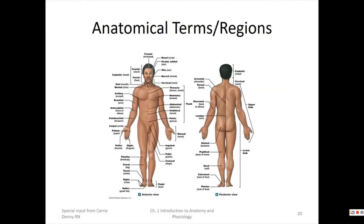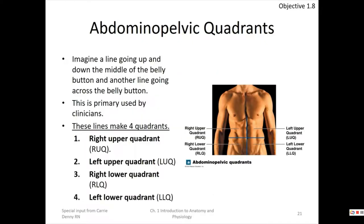On the posterior (dorsal) side: the dorsal or back surface is posterior. The lower back is lumbar or loin; gluteal is the buttocks; popliteal is the area behind the knee; calcaneal is the heel; and plantar is the bottom of the foot — that's where plantar warts or plantar fasciitis occur. The tendon at the heel is properly called the calcanean tendon, not the Achilles tendon — we are in human anatomy, not Greek mythology.